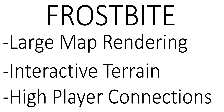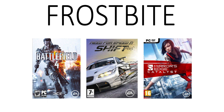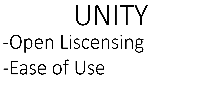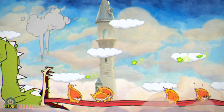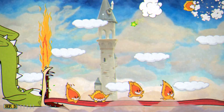The Frostbite engine is most notable for its ability to render very large maps with destructible terrain and large amounts of players. This has made it ideal for the Battlefield games, Mirror's Edge, and Need for Speed. The Unity engine has the advantage of having very loose and open licensing agreements and being relatively easy to use, even if it's somewhat limited in power. It's a great choice for third-party and independent games like Cuphead.